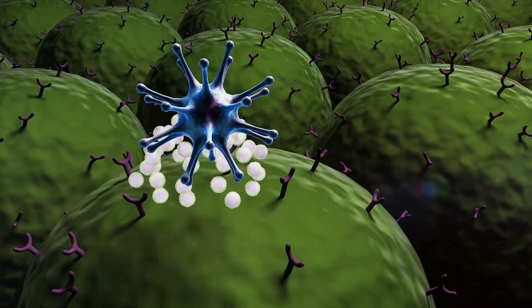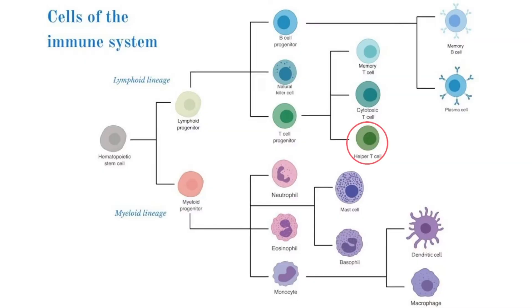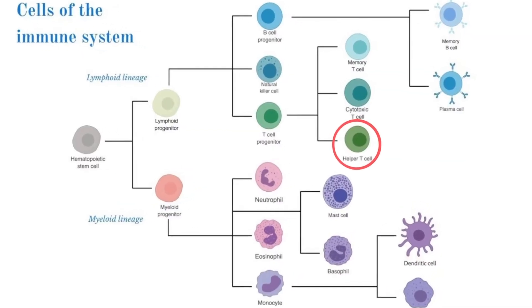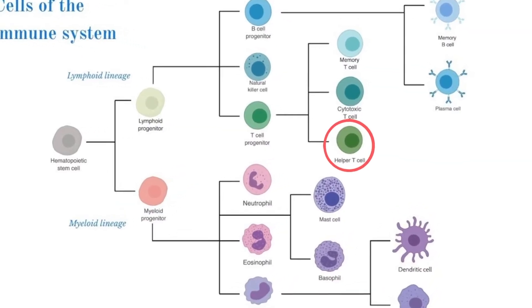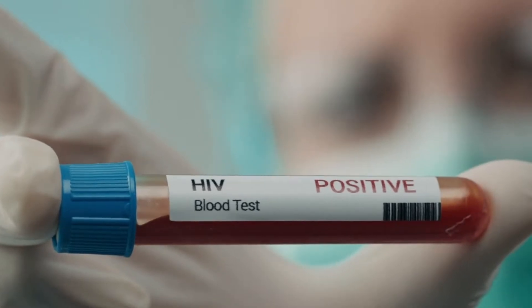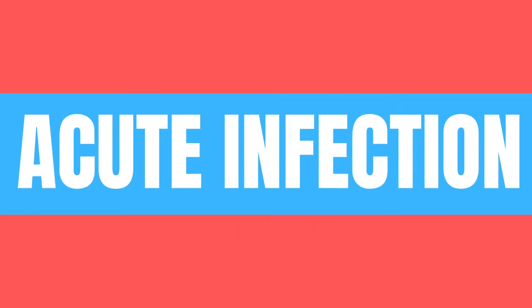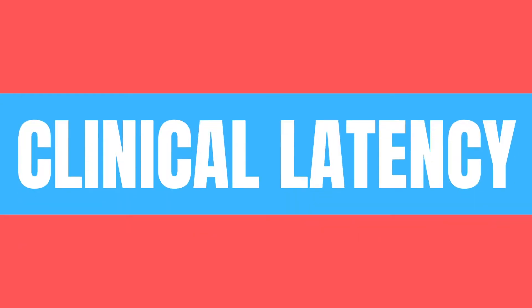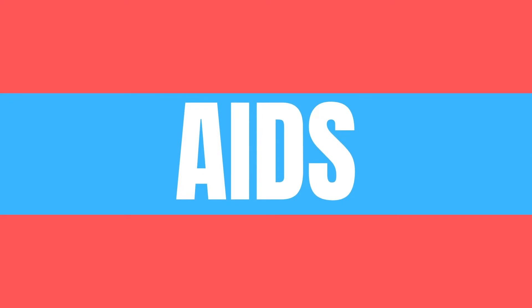HIV is a special form of virus called a retrovirus. It primarily infects cells of the immune system, most notably T-helper cells, also known as CD4-positive cells. These cells play a crucial role in directing and enhancing the activities of the whole immune system. An infection with HIV has three main stages: an acute infection, clinical latency, and ultimately AIDS.